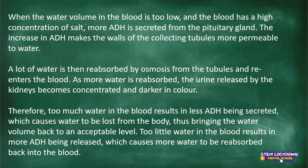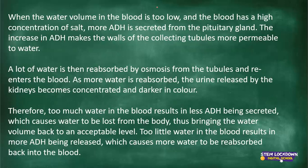When the water volume in the blood is too low and the blood has a high concentration of salt, then more ADH is secreted from the pituitary gland. The increase in ADH makes the walls of the collecting tubules more permeable to water. A lot of water is then reabsorbed by osmosis from the tubules and re-enters the blood. As more water is reabsorbed, the urine released by the kidneys becomes concentrated and darker in colour. So the opposite effect: water volume is low, blood has a high concentration of salt, and more ADH is secreted.